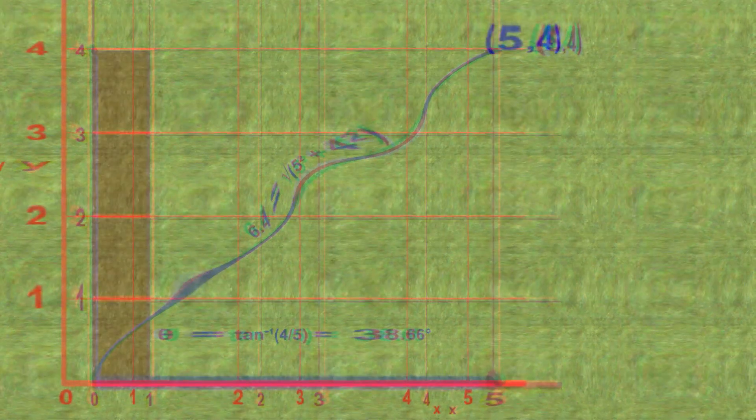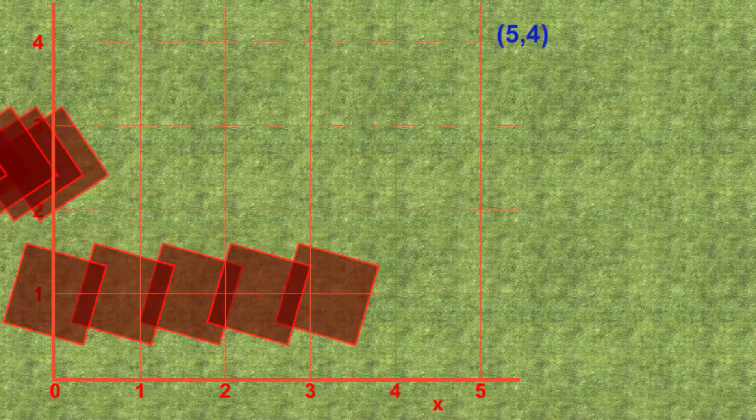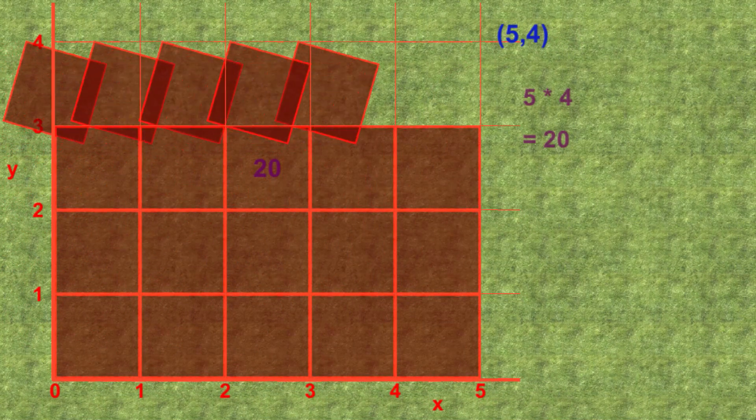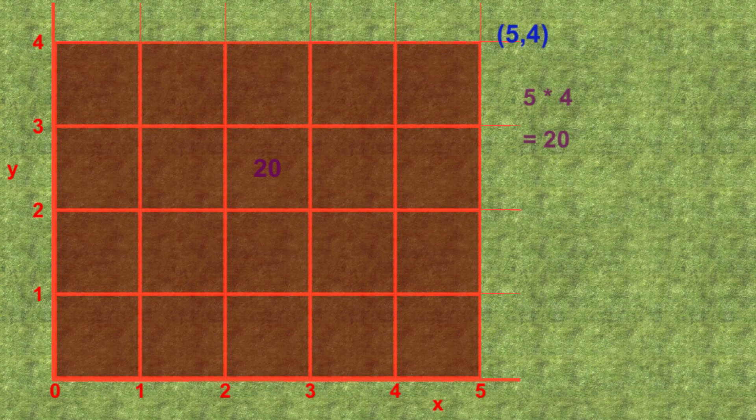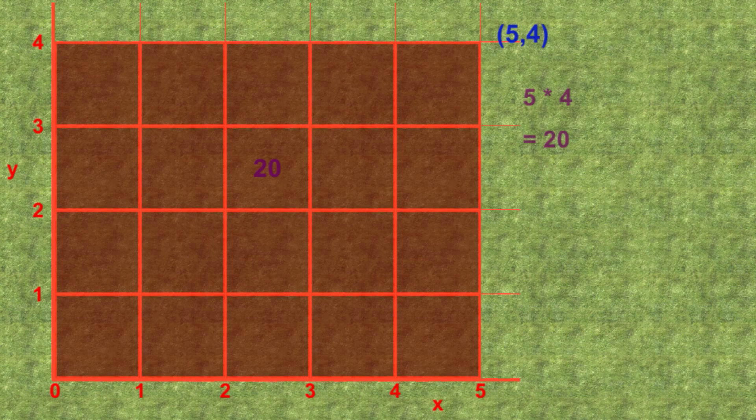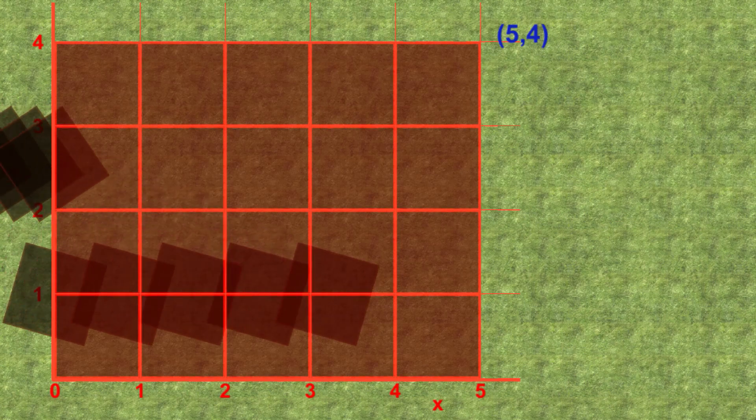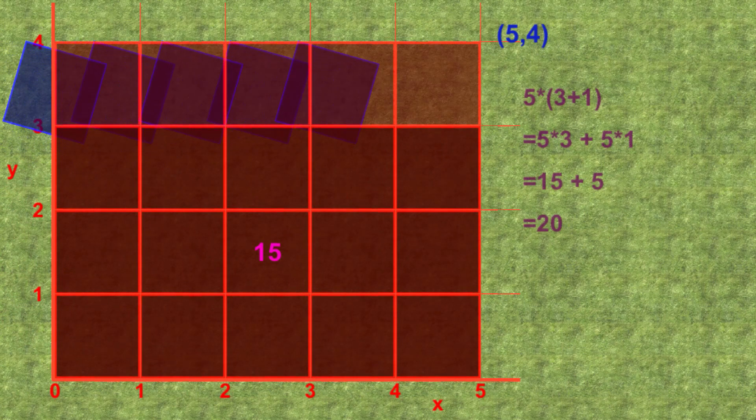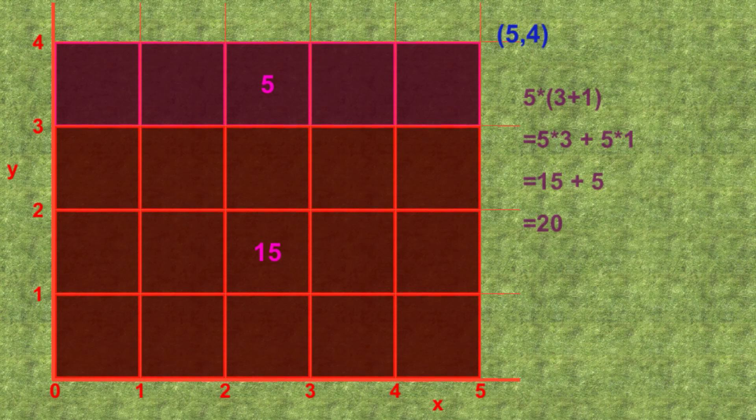Let's now have a look at the so-called distributive property of addition and multiplication in two dimensions. We start with an area of five squares by four squares. There are five squares in each row and there are four rows for a total of 20 squares. We can write five times four as five times in brackets three plus one. The distributive property states that we can calculate this in two different ways. The first is adding the three to the one and then multiplying the four by five, as we've already done.